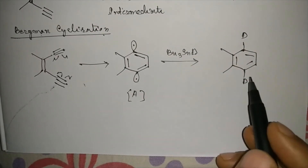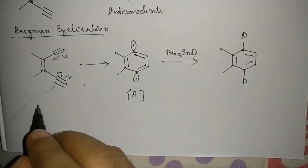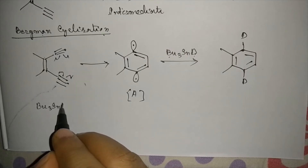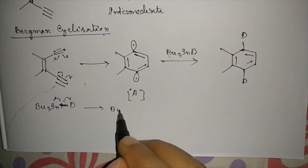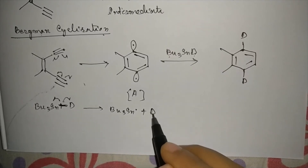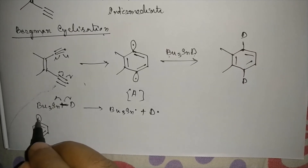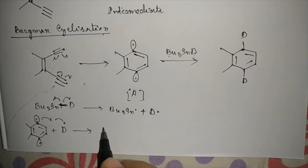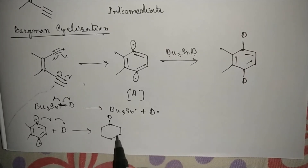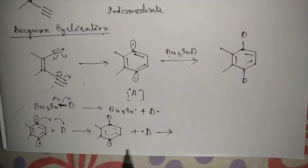This will be the product. Now let me determine the mechanism of Bu₃SnD. The Sn–D bond will cleave first because the Sn–D bond energy is very low. A Bu₃Sn• radical and a D• radical will form. This deuterium radical will then react with the intermediate, forming a bond, and another deuterium radical will give the final product.